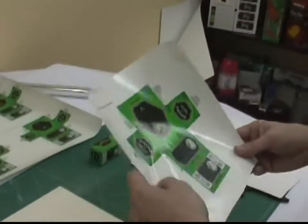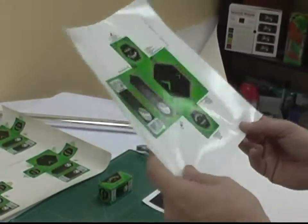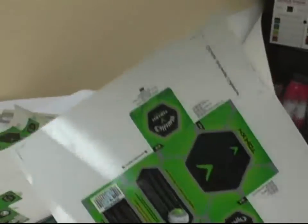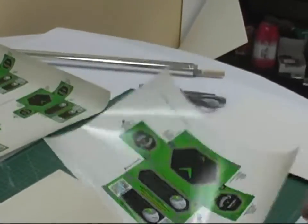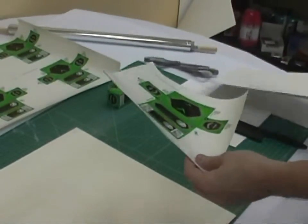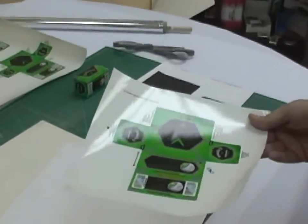We print the image in mirror because we're actually going to transfer it to the substrate. When it transfers to the substrate, which is 15 point C1S, it'll be right reading.